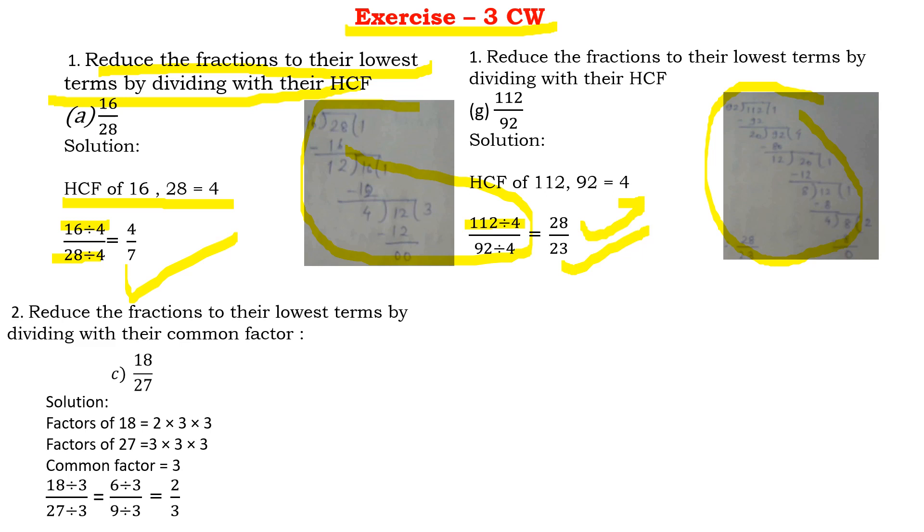Question number 2 is reduce the fractions to their lowest terms by dividing with their common factors. So simply if you see the fraction given is 18 by 27. If you see both the numbers are divisible by 3. So without finding the HCF I am dividing 18 by 3 and 27 by 3. On dividing I got them as 6 by 9. 6 by 9 can further be divided by 3. And finally the reduced form will be 2 by 3.